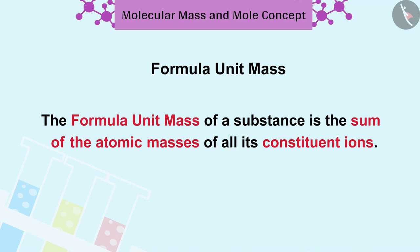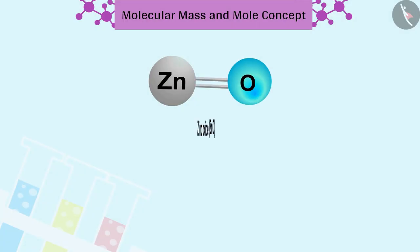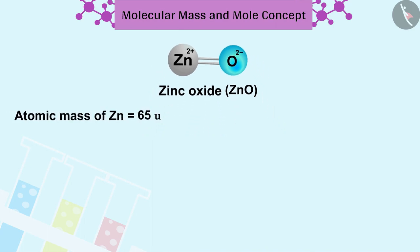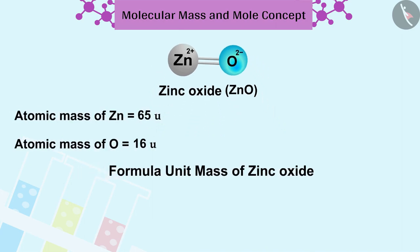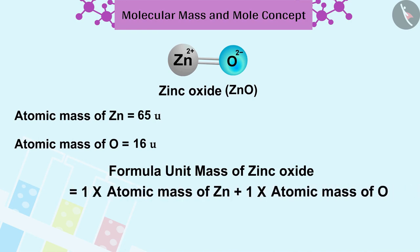For example, a zinc oxide ZnO molecule contains one zinc ion Zn2+ and one oxide ion O2-. Therefore we have the formula unit mass of zinc oxide in this way. One can find the sum of masses of a zinc ion and an oxide ion.